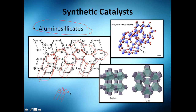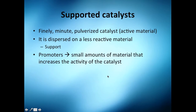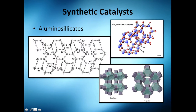Aluminum and oxygen bonds are very important in these structures. This is a zeolite, and this is just an aluminosilicate. Both have crystalline structures, but the first one is natural and the second one is human-made. And that covers natural and synthetic catalysts.